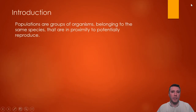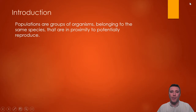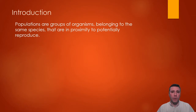A population is a group of individuals all belonging to the same species in a geographic area that is close enough to allow them to reproduce. We generally define a species as a group of individuals that can create viable offspring. The viability of offspring is determined based on whether or not said offspring can survive to reproductive maturity and is fertile.